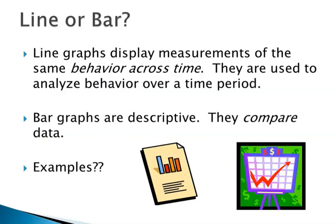Do we want to use a line or bar graph? In most cases we're going to use line graphs because we're looking at change over time, looking at the same behavior over time. Line graphs are used to analyze a specific behavior over time. Bar graphs are more descriptive — they compare. So if I'm comparing Sally's frequency of bathroom breaks to Jimmy's frequency of bathroom breaks, I'd use a bar graph. But if I was trying to reduce Sally's bathroom breaks over the course of a week, I would use a line graph.